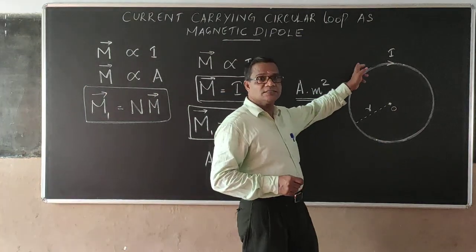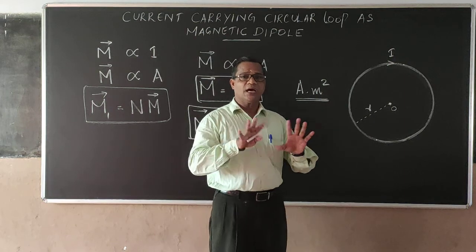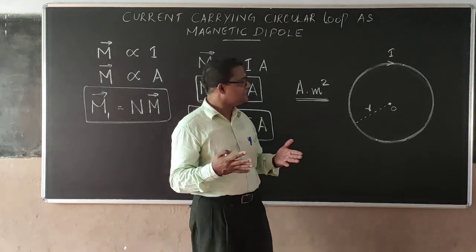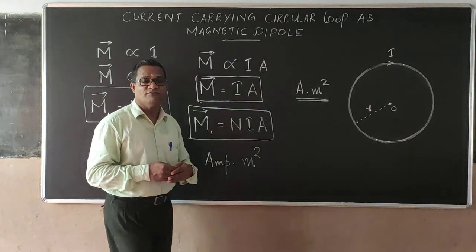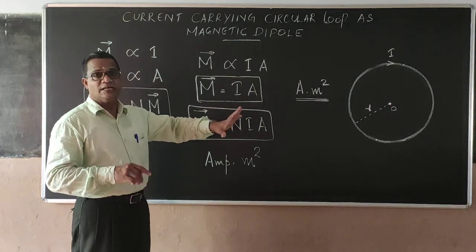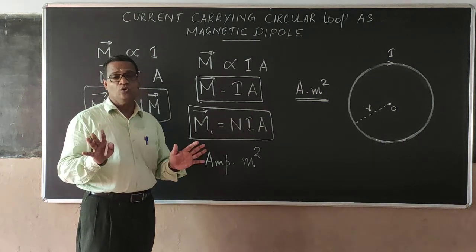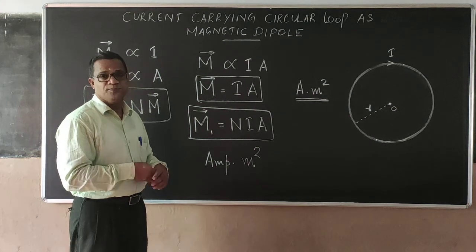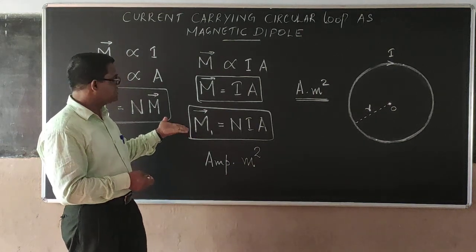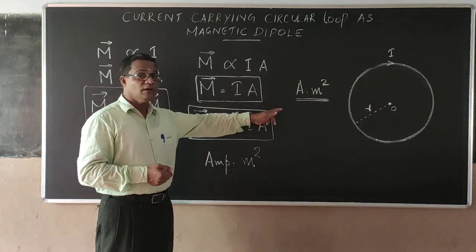Here we considered a regular circular loop of radius r, but it is found that if you take a planar loop of any shape and size, the magnetic dipole moment is the product of the current and the area of the loop. So shape and size are not a problem — it must be a planar loop, and shape is irrelevant. The magnitude of the magnetic dipole moment of the loop carrying current is equal to N times I times A, and its unit is ampere meter squared.